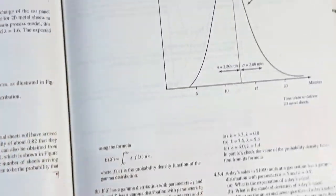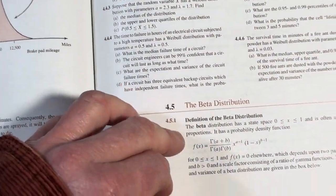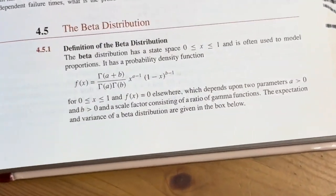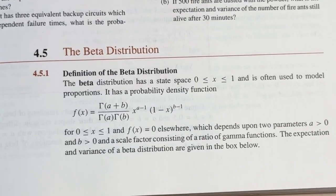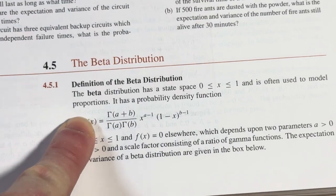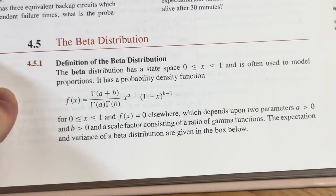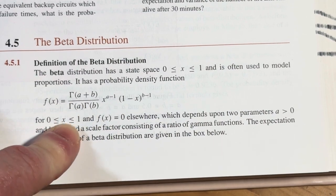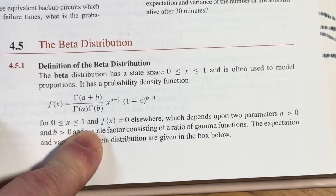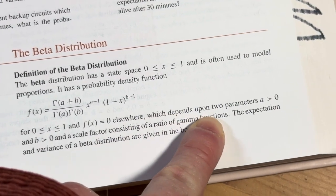The beta distribution. The beta distribution has a state space, and it's x between zero and one is often used to model proportions. It has this probability density function. It's the gamma function. For x between zero and one inclusive and then f of x equals zero elsewhere, which depends on two parameters.